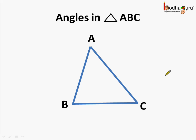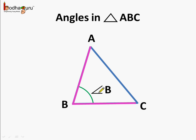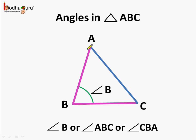Now what are the angles in triangle ABC? If we consider the two line segments AB and BC, then the angle made at the vertex B is called angle B. We can call angle B by other names too, like angle ABC or angle CBA. Remember, whichever angle we are talking about is always in the middle or in the center. Here B is in the center in both cases, so it represents angle B only.